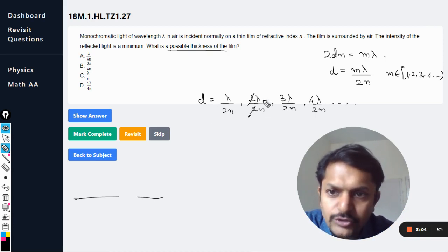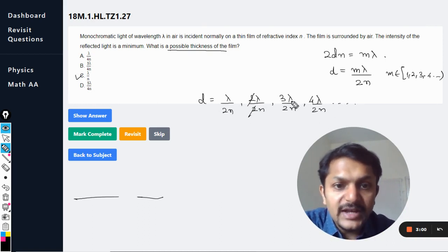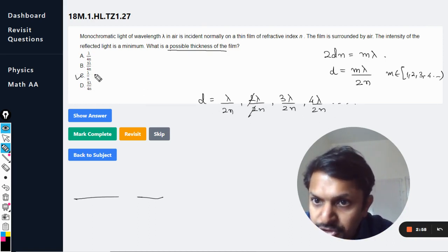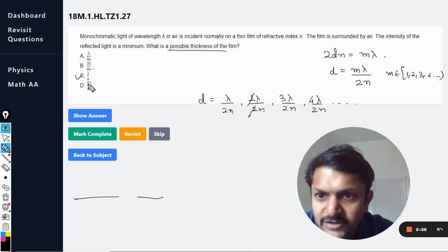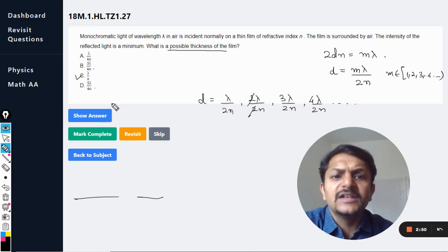So this 2 and 2 gets cancelled out, so lambda by n. Yes, C is talking about lambda by n. 3 lambda by 2n is not in the option. 3 lambda by 4n is there, 5 lambda by 4n is there, but there is no scope of 4, it's only 2.